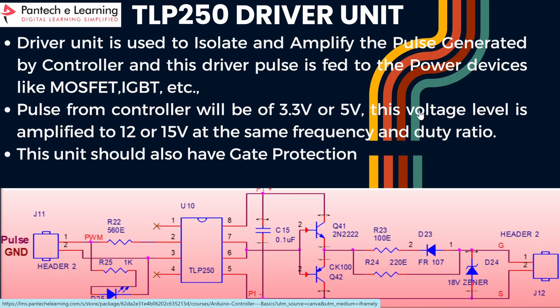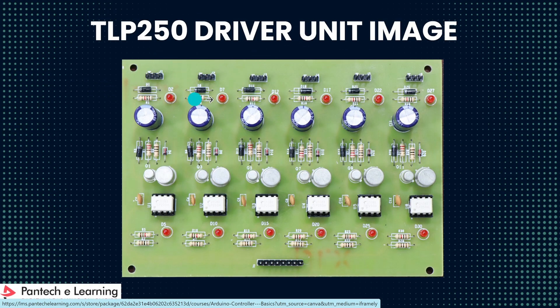Next, the TLP250 driver unit. This circuit is mainly used to isolate and amplify the pulse given from the controller, which is then fed to power devices like MOSFET or IGBT. Normally, the controller produces around a 3.3V pulse, which is not enough to operate MOSFET devices. So we use this TLP250 driver unit, which amplifies the voltage up to 12 to 15 volts, with the same frequency and same duty ratio. This TLP250 unit also has gate protection.